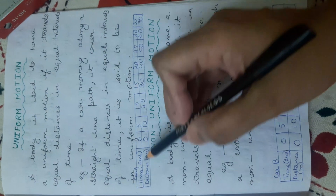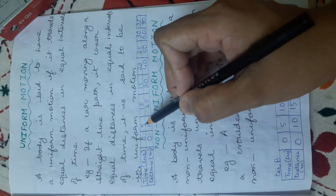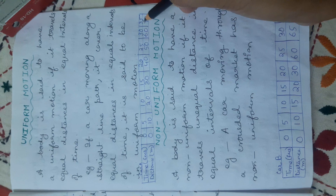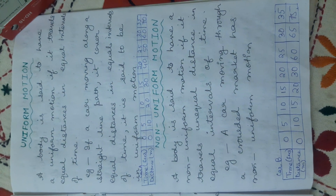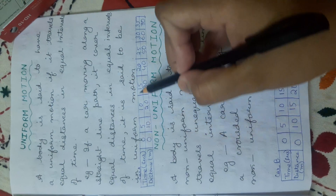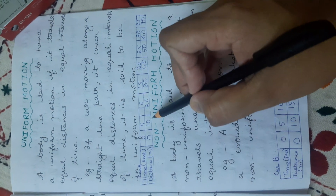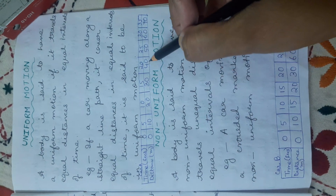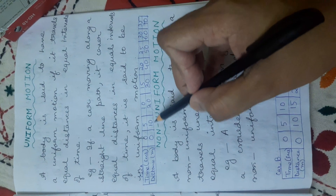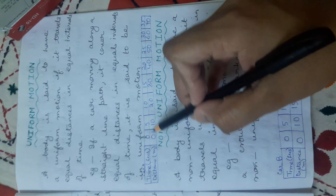Let us see this table. The time column shows: 0, 5 seconds, 10 seconds, 15 seconds, 20 seconds, 25 seconds, 30 seconds, 35 seconds — so the time interval is 5 seconds each. The distance column shows: 0, 10, 20, 30, 40, 50, 60, 70 meters — a gap of 10 meters each.